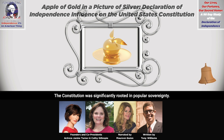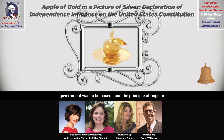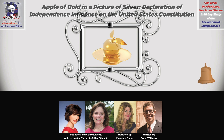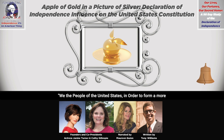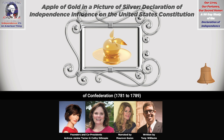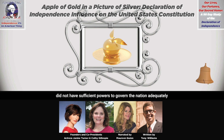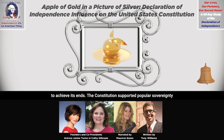The Constitution was significantly rooted in popular sovereignty. The preamble to the Constitution agreed that the new constitutional government was to be based upon the principle of popular sovereignty. It began: 'We the people of the United States, in order to form a more perfect union.' The previous government, under the Articles of Confederation (1781 to 1789), did not have sufficient powers to govern the nation adequately, so the framers decided to create a new government with powers to achieve its ends.